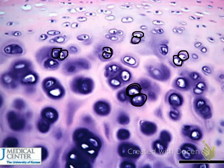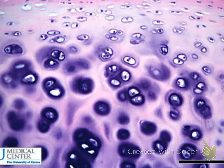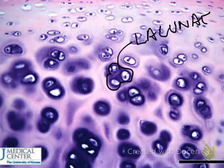The cells found in cartilage tissue are called chondrocytes. The house or the space that they're sitting in — this darker area behind it — is called the lacunae. The chondrocytes live inside the lacunae.